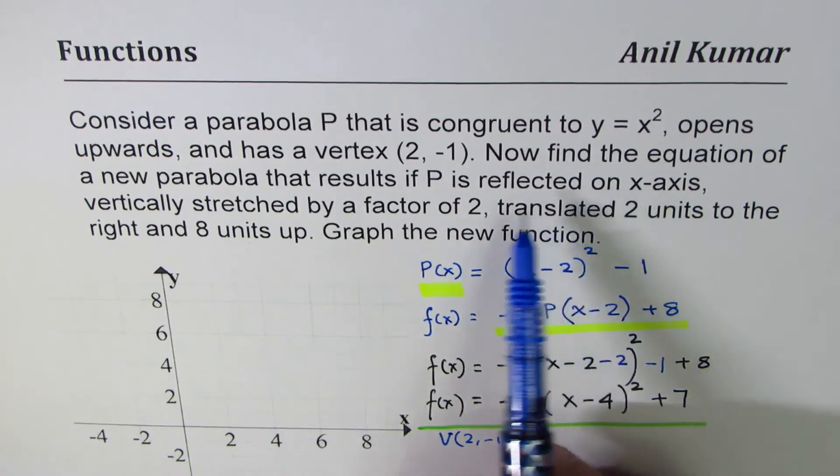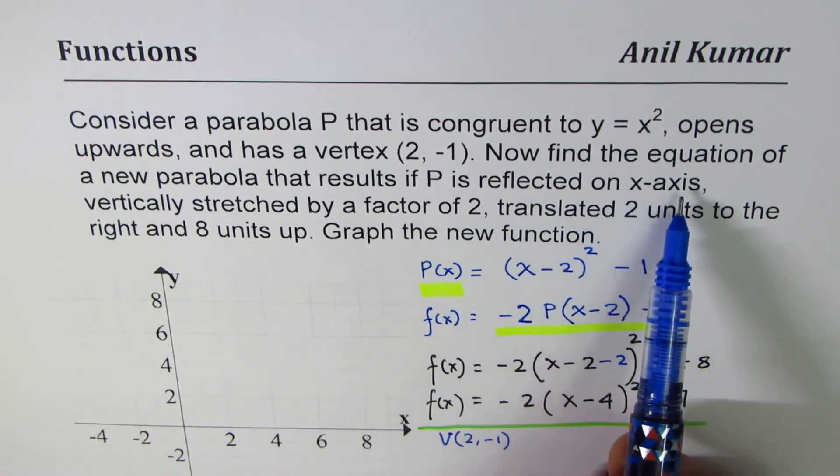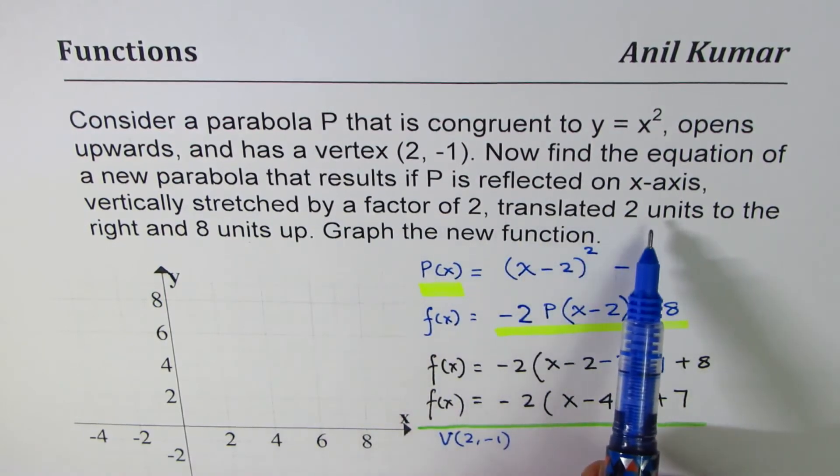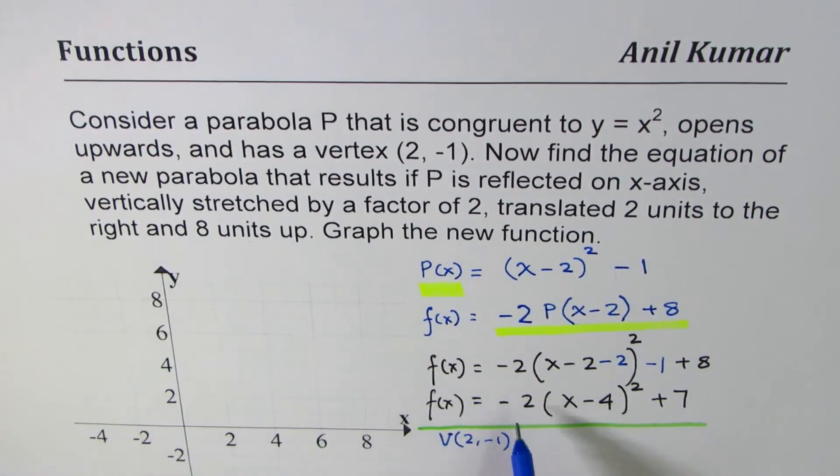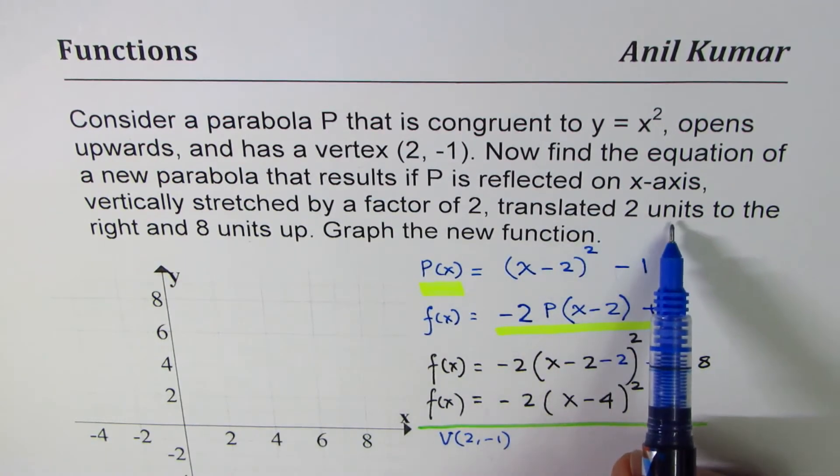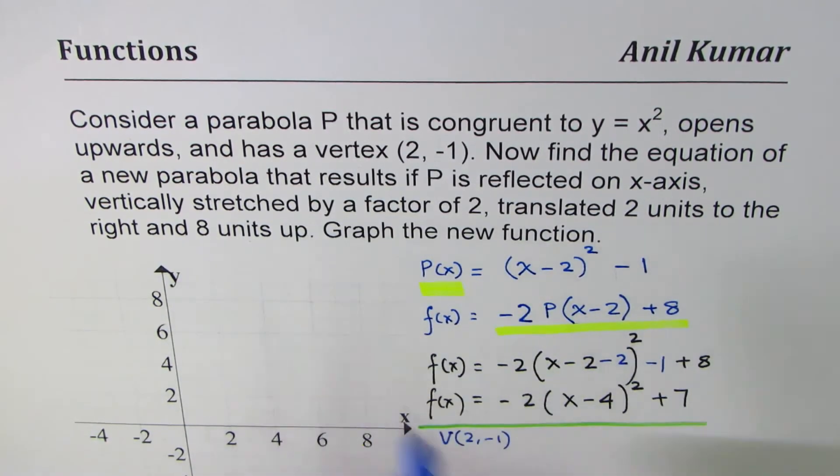It has been reflected on x-axis, vertically stretched by a factor of 2, translated 2 units to the right and 8 units up. So if I reflect this vertex, this point, then you can see the translation part of the vertex is because of 2 units to the right and 8 units up.